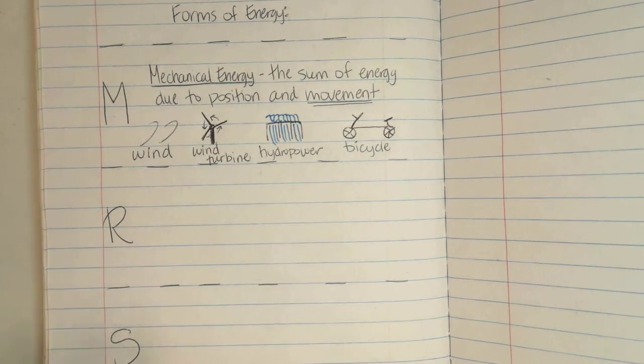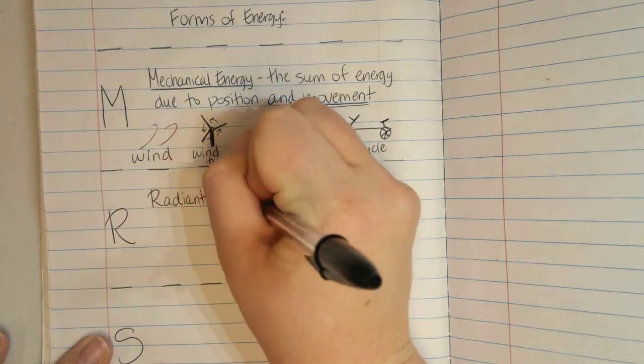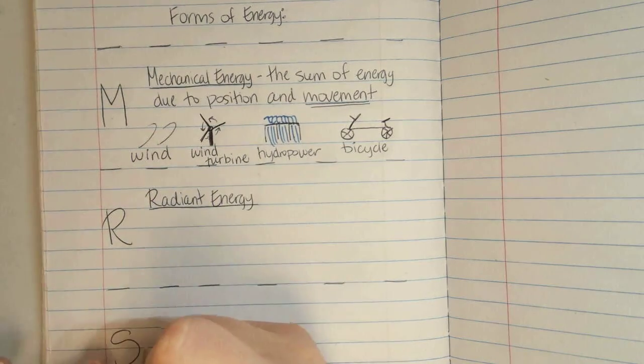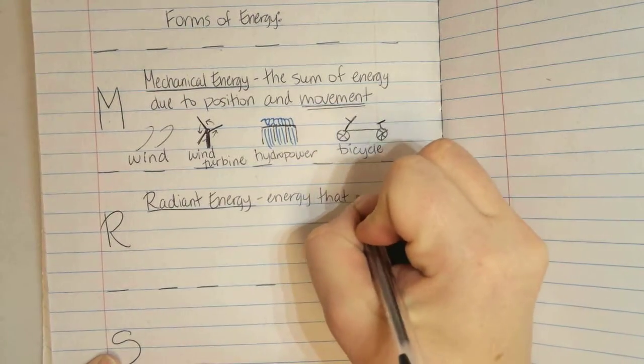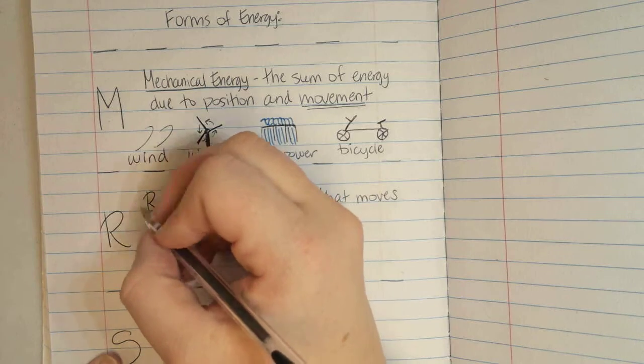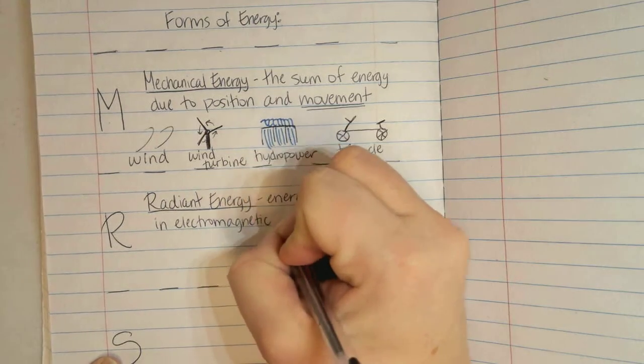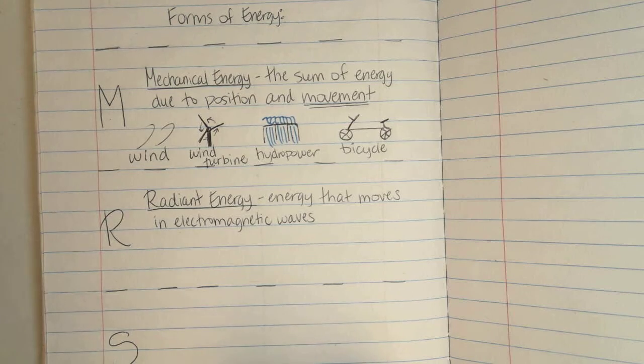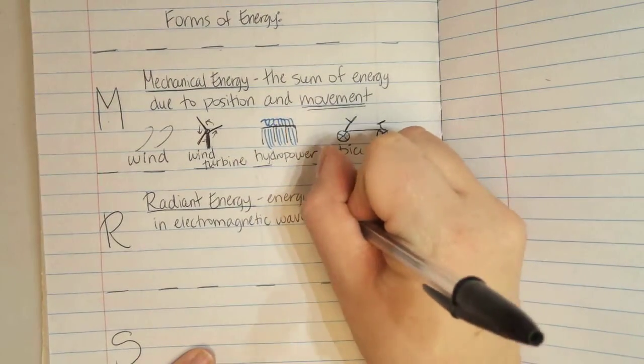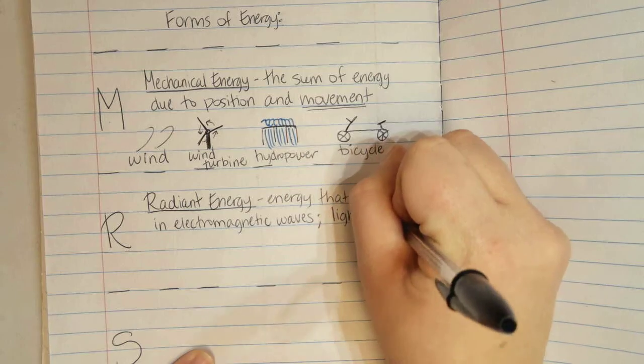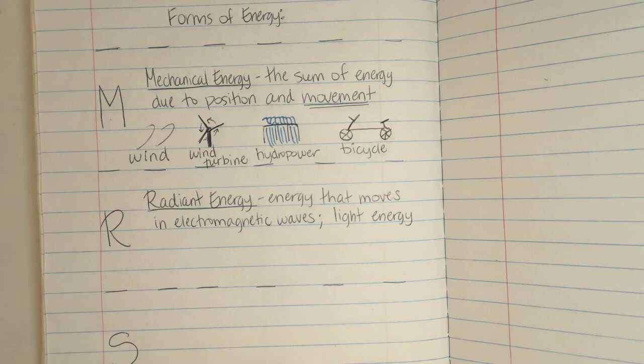Now, the R right below that stands for radiant energy. Radiant energy is defined as energy that moves in electromagnetic waves. Another term for radiant energy is light energy. So anything that's giving off light is going to be an example of radiant energy.